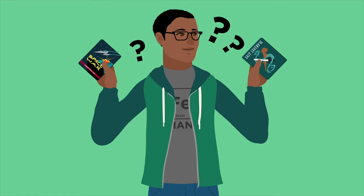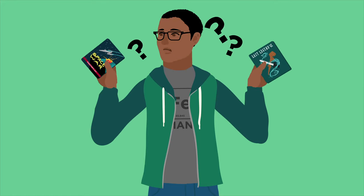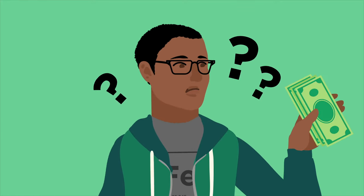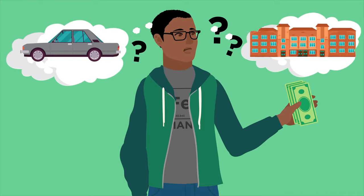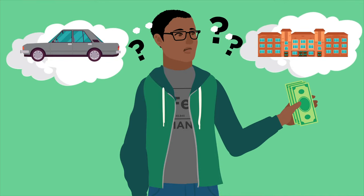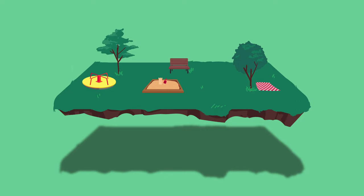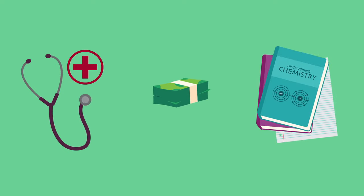If you decide to spend it, you may choose whether to buy a video game or a DVD of your favorite movie. Tough choice, huh? If you choose to save your allowance, will you save it for a car or for college? On a broader level, scarcity forces society to choose how to use resources as well. Will a piece of land be used for a park or for housing? Will tax dollars be used for health care or for education?